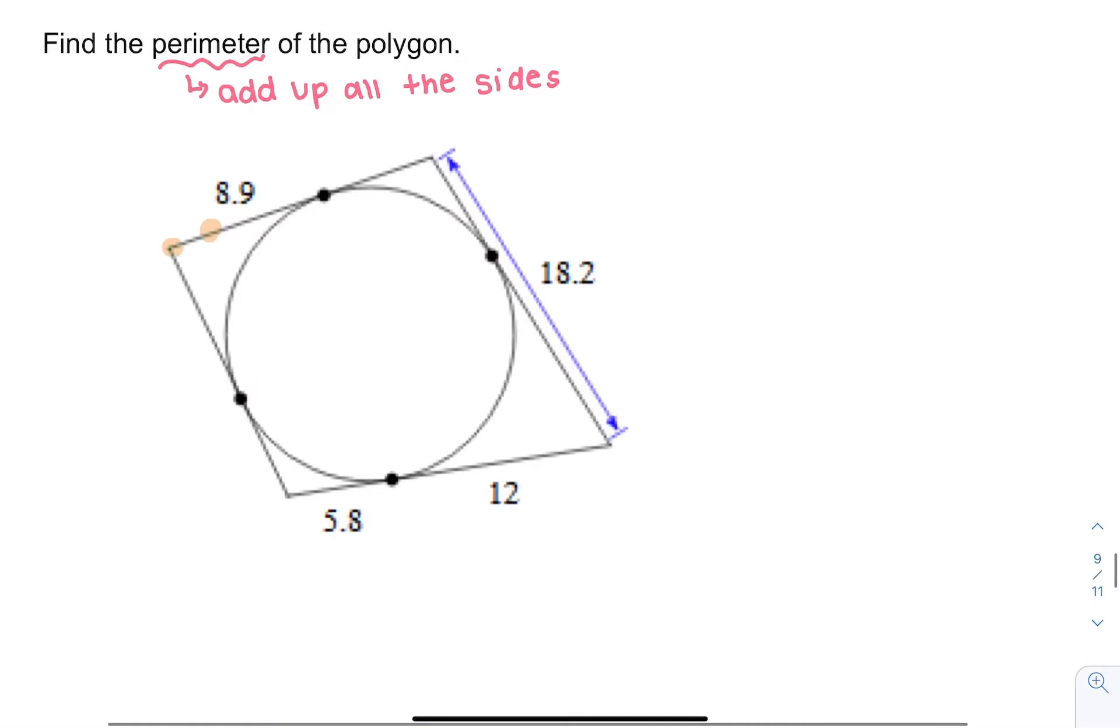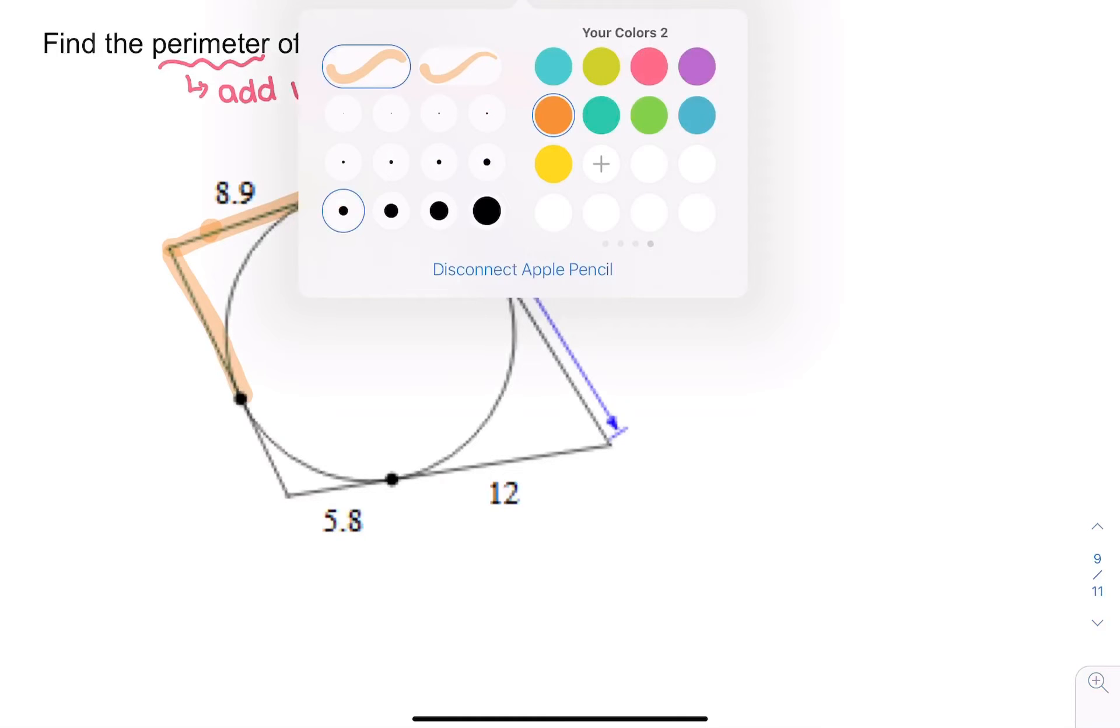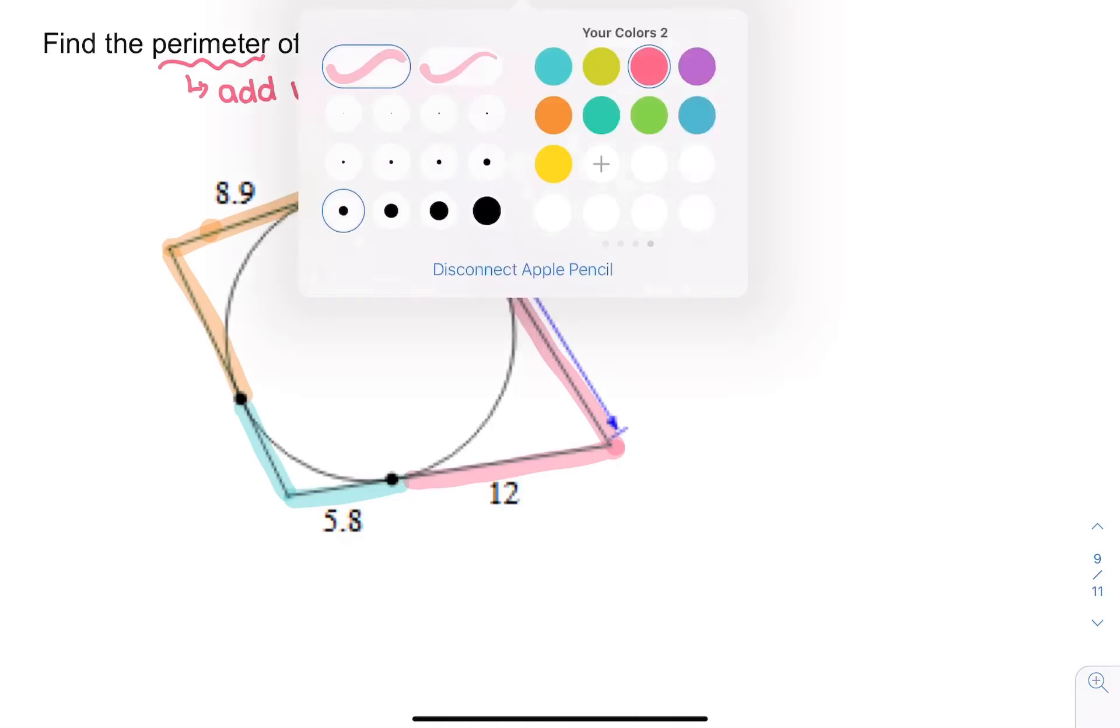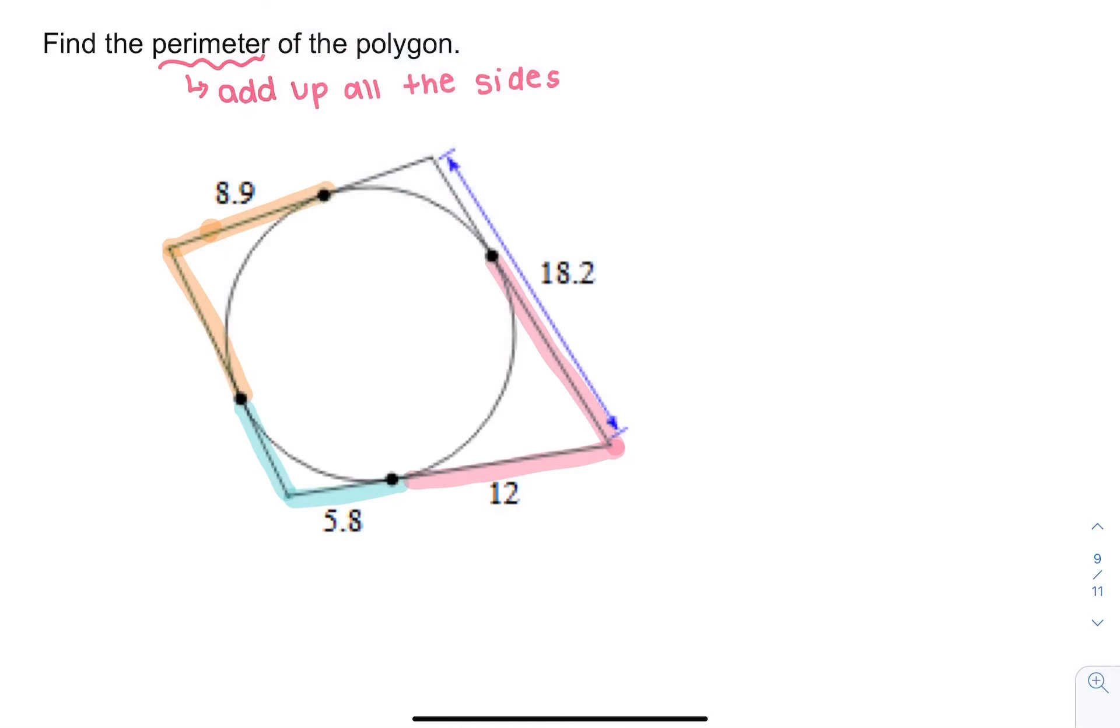Here we have our first tangent line. Which one is this equal to? Well, it intersects this tangent line. Then I have another one. I have this tangent line is equal to this tangent line. Then I know this tangent line is equal to this tangent line. And last up, I know this tangent line is equal to this tangent line.